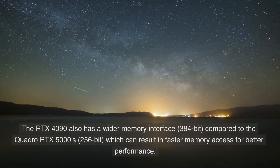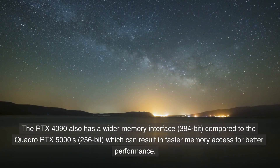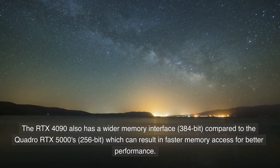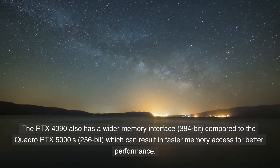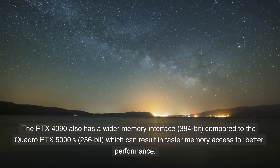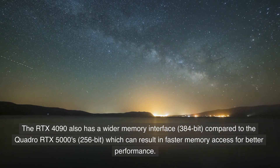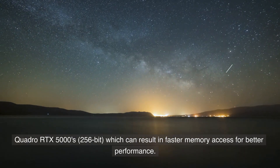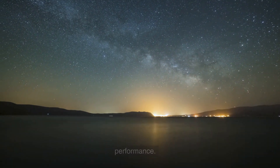The RTX 4090 also has a wider memory interface — 384-bit — compared to the Quadro RTX 5000's 256-bit, which can result in faster memory access for better performance.